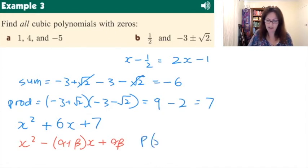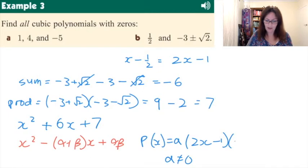we have to write that polynomial out, so we would have P(x) is equal to, put in a, where a is not equal to 0. Our first linear factor was 2x take 1, and then our quadratic factor is x squared plus 6x plus 7, and that's that one.